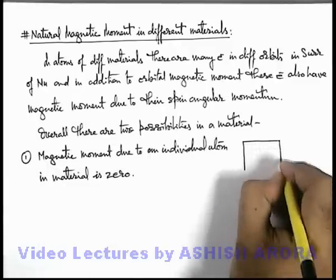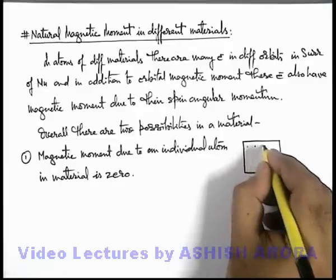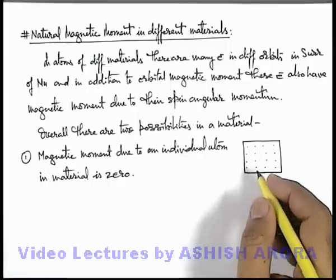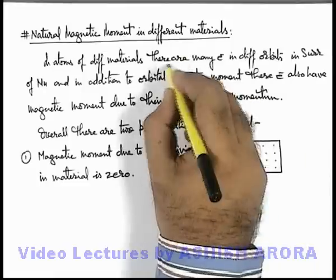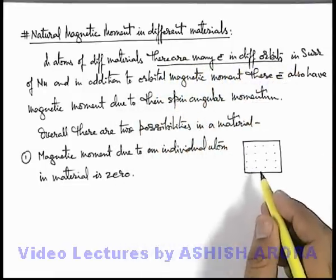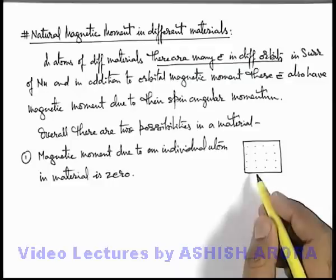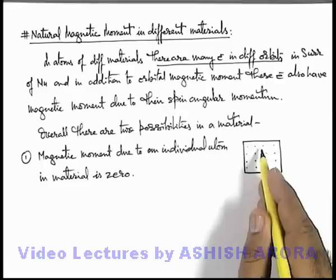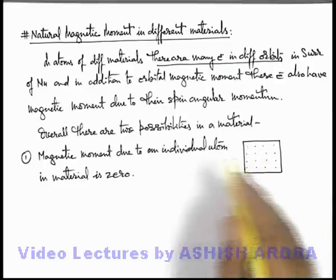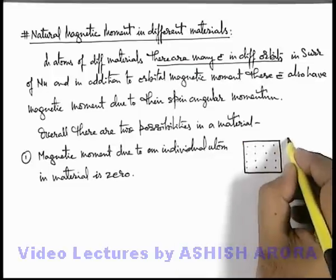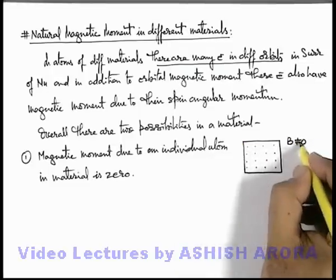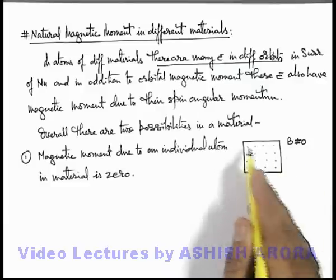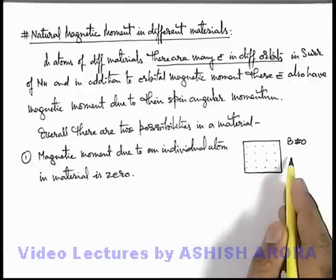It is like if we are given a solid material, every atom of this solid material arranged in the lattice structure has zero individual magnetic moment. Because there are many electrons in different orbits, and for an atom it is possible that all electrons are revolving in different positions in different orbits, so on average each atom will have a zero dipole moment. And if every atom has zero magnetic moment, then the magnetic induction in its surrounding will also be zero. The overall material does not produce any magnetic effect in the surrounding.